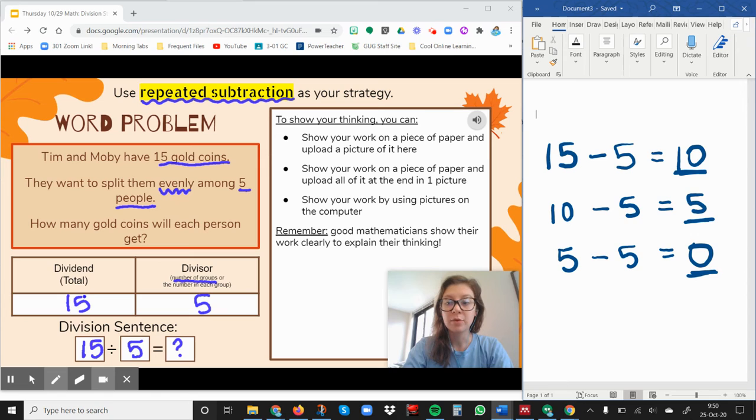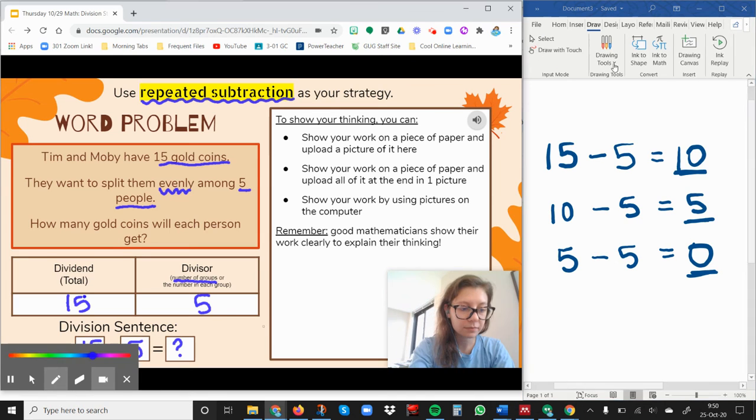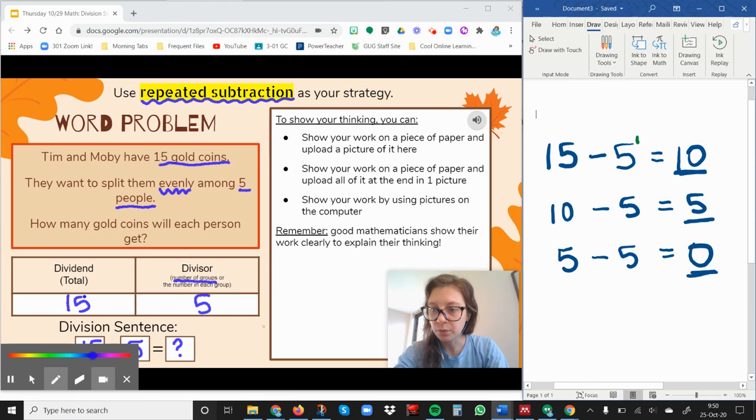Now I'm going to count the number of times I took 5 away. So I just changed my color so you can see that there's 1, 2, 3 times that I took 5 away, that I subtracted 5.